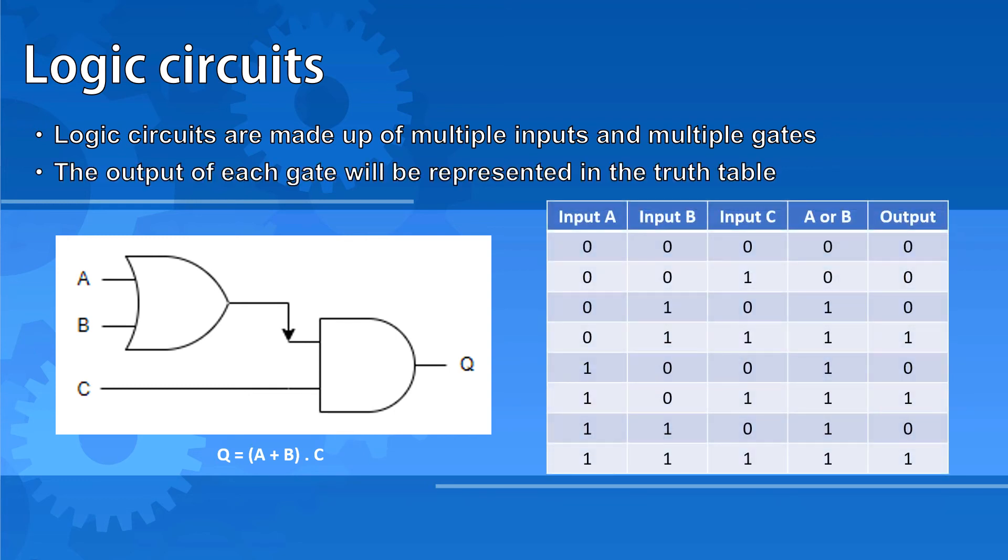Our truth table now needs to consider three different inputs. There will always be 2 to the n possibilities to consider where n is the number of inputs. So in this case, there are 8. You will notice that I have counted up in binary from 0 to 7. 0, 0, 0, 0, 0, 1, 0, 1, 0, which is 2, 0, 1, 1, which is 3, 1, 0, 0, which is 4, carrying on all the way to 7. This is really important so that you don't accidentally miss out one of the combinations or repeat one of the combinations, which would cost you marks in an exam.